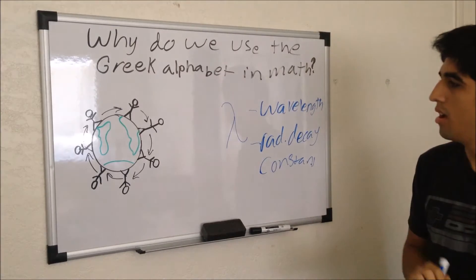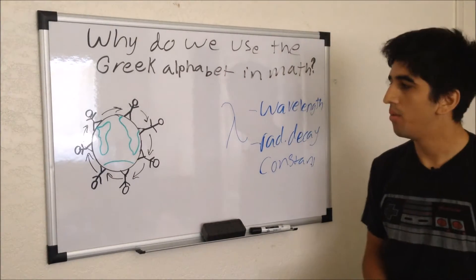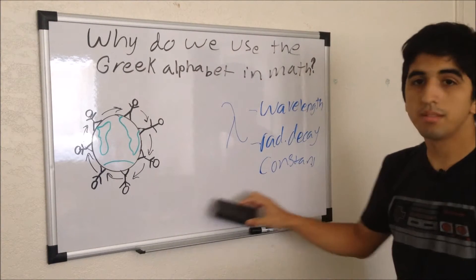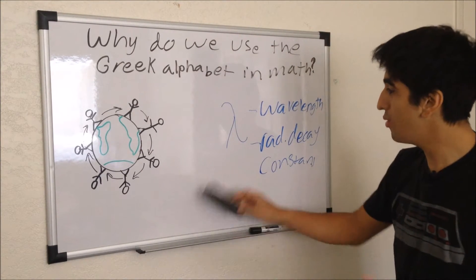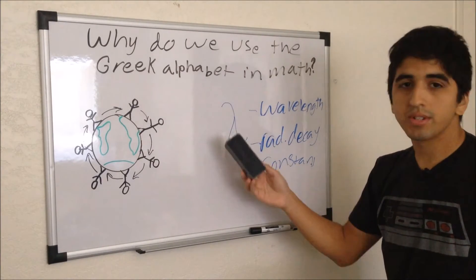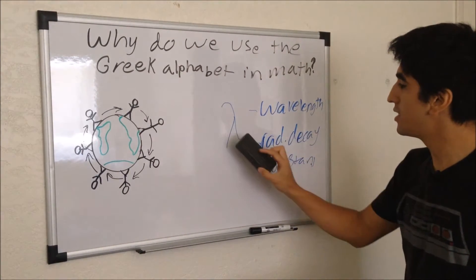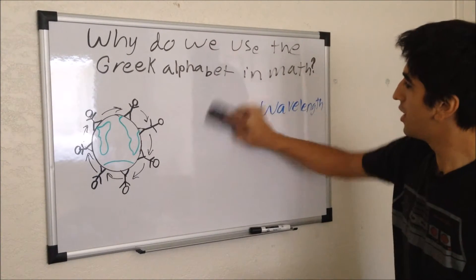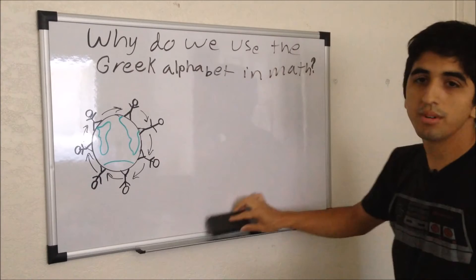So what do we do then? Well, we also know depending on context which one to use. Like I said, if you're using nuclear chem, that person is going to know radioactive decay constant, not wavelength. And it comes with knowing what you were doing in math.